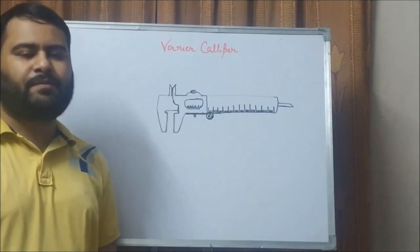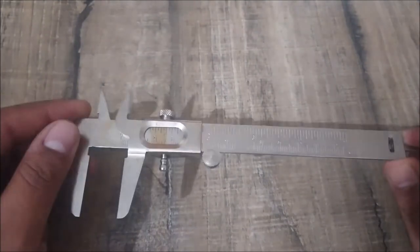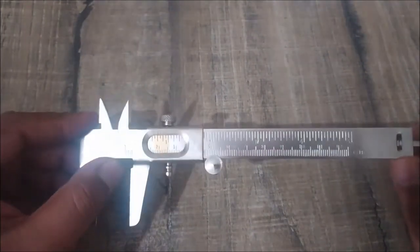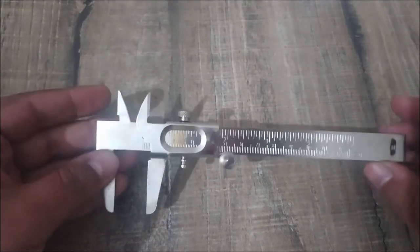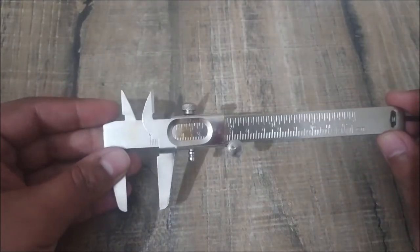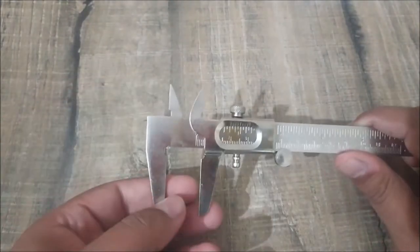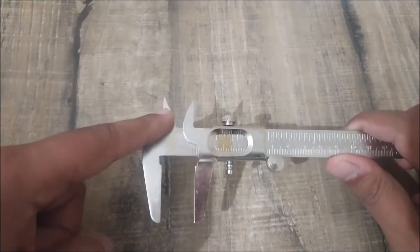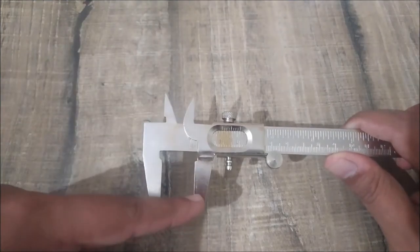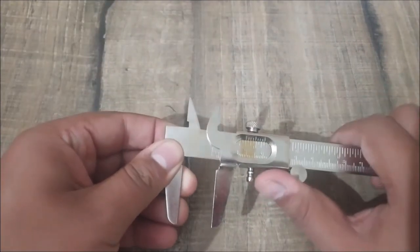This device is called Vernier caliper. Earlier we were only familiar with the ruler or meter scale for measurement of length. From now onwards we will be familiarizing with this one more device which is used for measurement of small lengths — the Vernier caliper. Here you are watching two pairs of jaws: two above and two down. These are called lower jaws and these are called upper jaws. Upper jaws are meant for measuring the internal diameter and lower jaws are meant for measurement of external diameter.